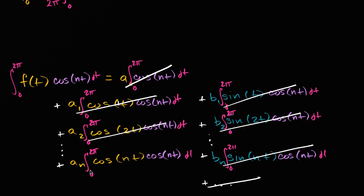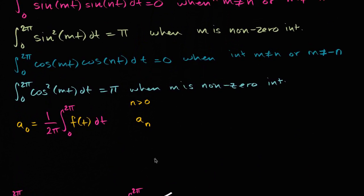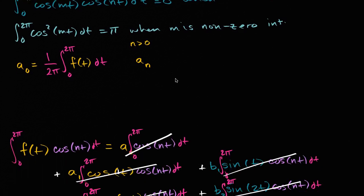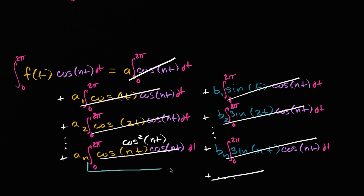The surviving term is the definite integral from zero to two pi of cosine²(nt) dt. We established previously that for any non-zero n, this integral equals π. So that whole integral evaluates to π.